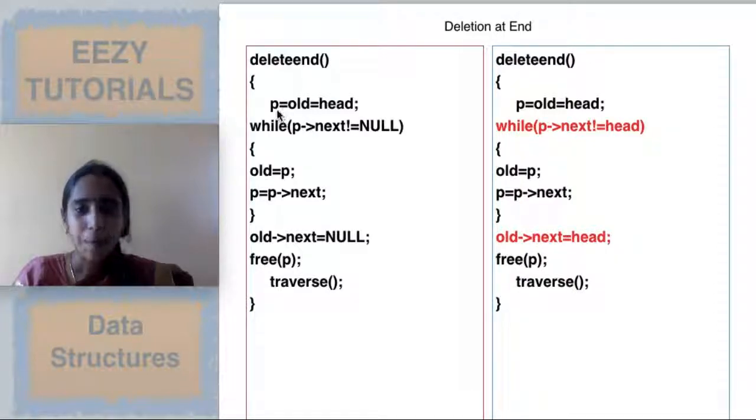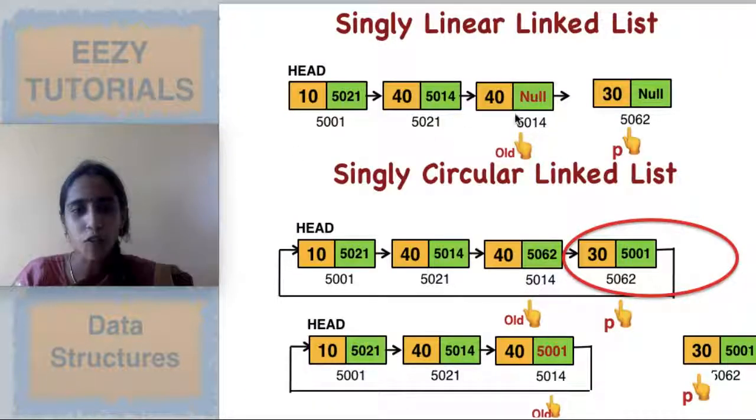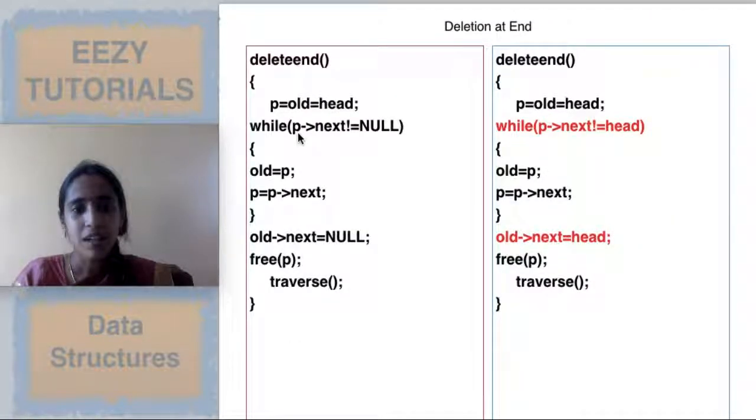First p equals old equals head we are making. Then in linear linked list how will you reach the last node? When p of next is not equal to null. Here while p of next is not equal to null means linear list. Circular means p of next is not equal to head. So this is the first change you have to make.